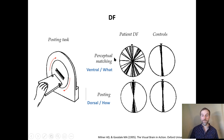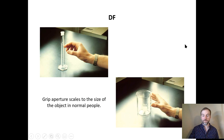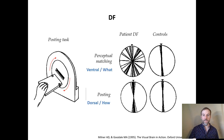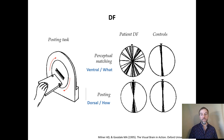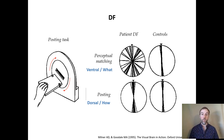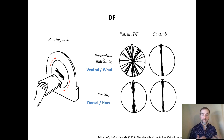This shows us the fascinating dissociation between perception — what abilities — and action — how abilities. We can lose one and not the other. From DF we know that perception is done by the ventral stream, because that's what has been damaged and that's what she's lost.